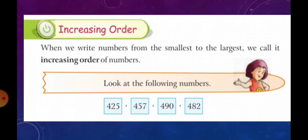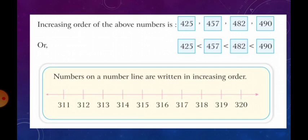Okay, now look at the following numbers: 425, 457, 490 and 482. Now, arranging in increasing order, we get 425, 457, 482 and 490.